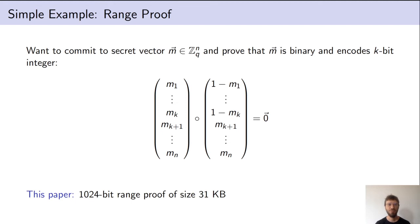This problem can be solved with a product proof, where one is able to prove product relations on individual coefficients of the vector m. We want to prove that the first k coefficients are 0 or 1, fulfilling the relation m_i times (1 minus m_i) equals 0, and that the remaining coefficients are 0, shown by proving m_i squared equals 0. One main result is an improved product proof yielding a range proof with a 31 kilobyte proof size for a 1024-bit range.